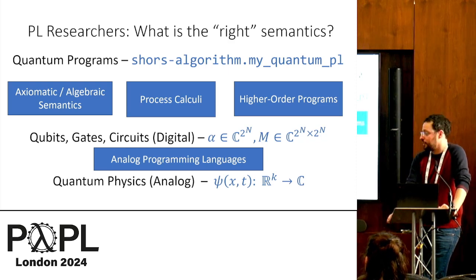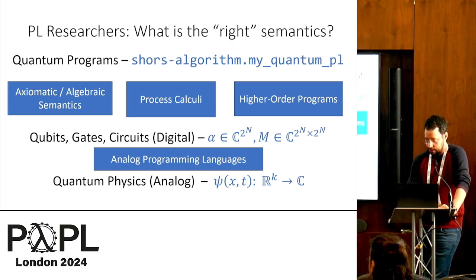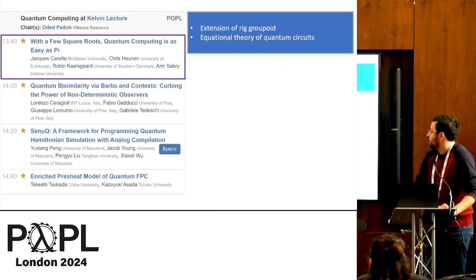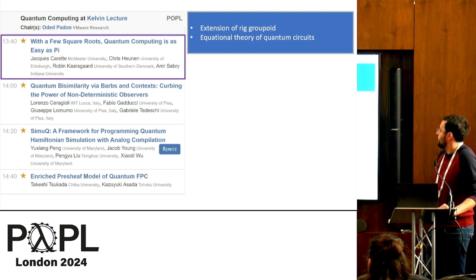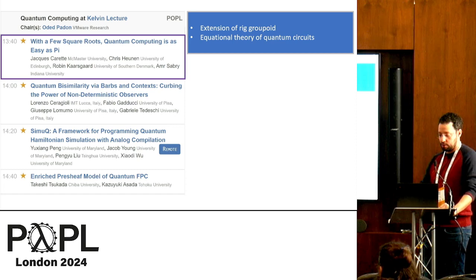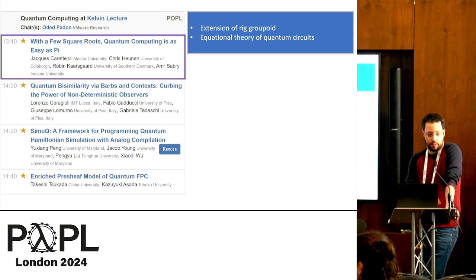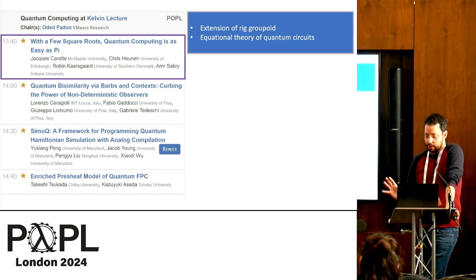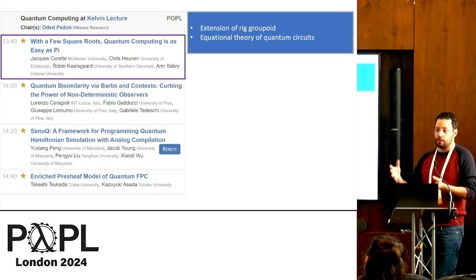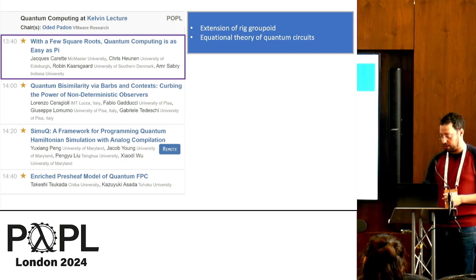And we can also even go beyond the digital abstraction and consider directly programming the analog quantum devices. And in fact, these are exactly the four papers of this session. So the first paper uses something called an extension of something called the rig groupoid, or the rig category, to give an equational theory of quantum circuits that will let us reason about the equality between quantum gates and circuits, not by considering their matrices, but by considering some algebraic theory.